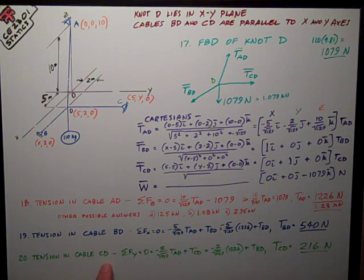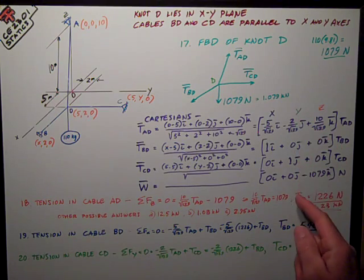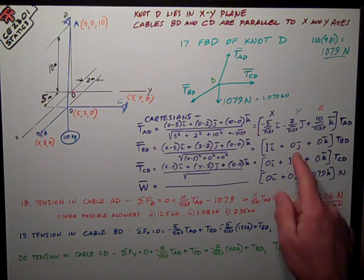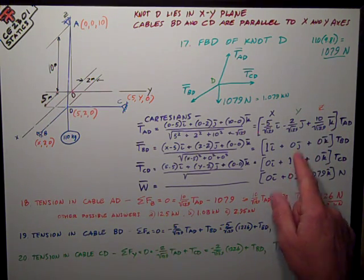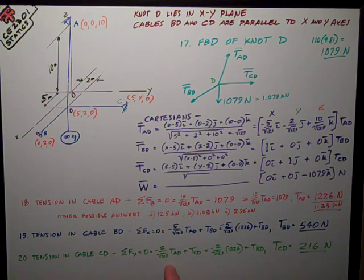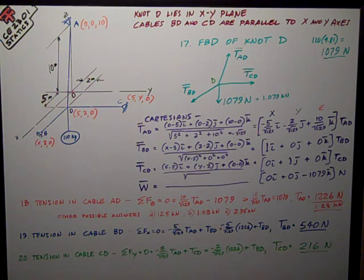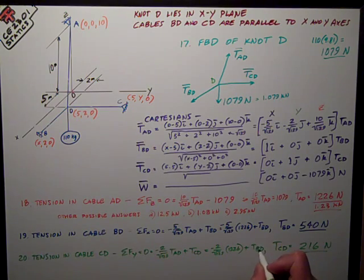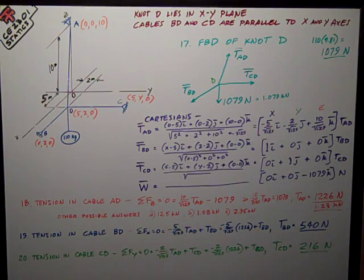Finally, the tension in cable CD. Look in these columns, I've got just TAD plus the TCD, the Y component. So I want to use my sum of forces in the Y. Negative 2 over the square root of 129 TAD plus TCD. Plugging in the value for TBD. I mean TAD. And I just wrote that wrong. That's TCD. So TCD is equal to 216 newtons.